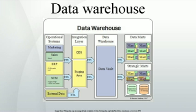The main disadvantages of the dimensional approach are the following. In order to maintain the integrity of facts and dimensions, loading the data warehouse with data from different operational systems is complicated. It is difficult to modify the data warehouse structure if the organization adopting the dimensional approach changes the way in which it does business. In the normalized approach, the data in the data warehouse are stored following, to a degree, database normalization rules. Tables are grouped together by subject areas that reflect general data categories, for example data on customers, products, finance, etc.